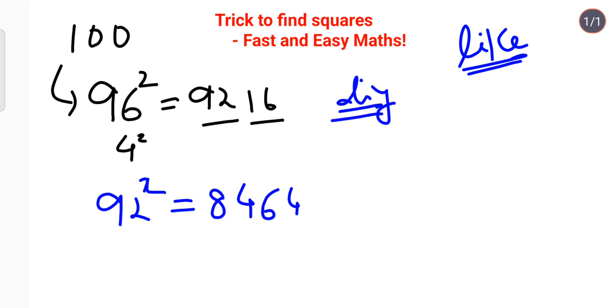Now let's take 88 squared. This is 12 digits away from 100, so we subtract 12 from 88 to get 76. Then we do 12 squared. Please remember, the last part of your answer should have only two digits. 12 squared is 144, so we write 44 and carry the 1. So 76 becomes 77, and our final answer is 7744.